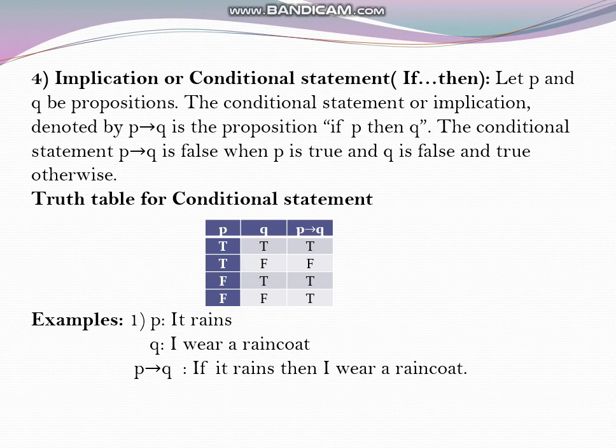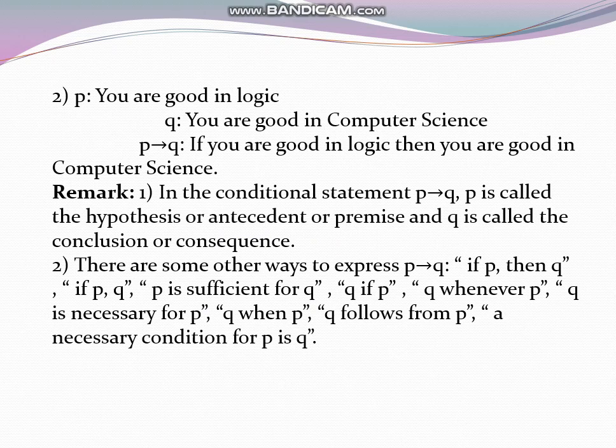Let us see a few more examples. The p statement is 'you are good in logic' and the q statement is 'you are good in computer science'. So what will be the statement p implies q? If you are good in logic then you are good in computer science. That means the first statement implies the second one, and the first statement is the condition for the second one.